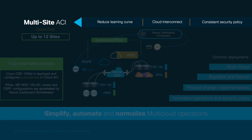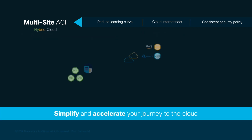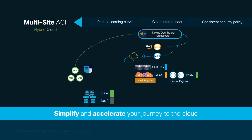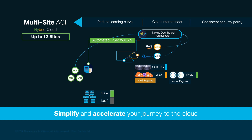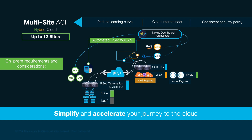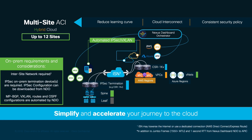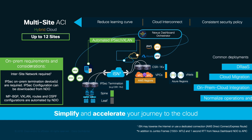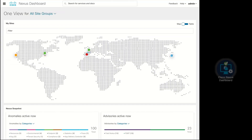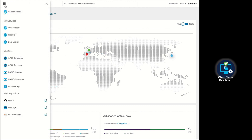For hybrid cloud deployments, Nexus Dashboard Orchestrator would also connect to each APIC on-prem and in the cloud, automating IPsec tunnels between the CSRs in the cloud and a VPN termination device on-prem, enabling OSPF and MP-BGP eVPN VXLAN across all of them. With this model, you can scale up to 12 sites as well. Keep in mind that on the on-prem side, you would still need an ISN device pair with OSPF configured on VLAN 4 for the first-hop devices, connected to the VPN termination devices you choose. This scenario is commonly implemented for cloud migration, disaster recovery as a service, and hybrid cloud integrations, delivering a consolidated management tool with consistent security and a common operational model across clouds.